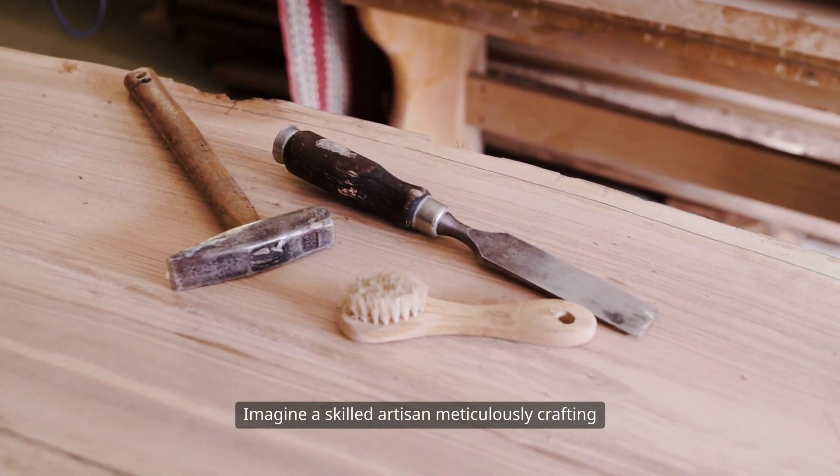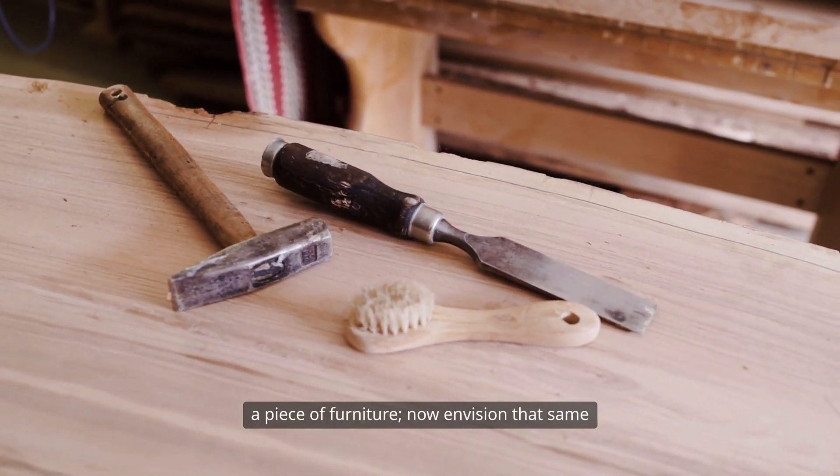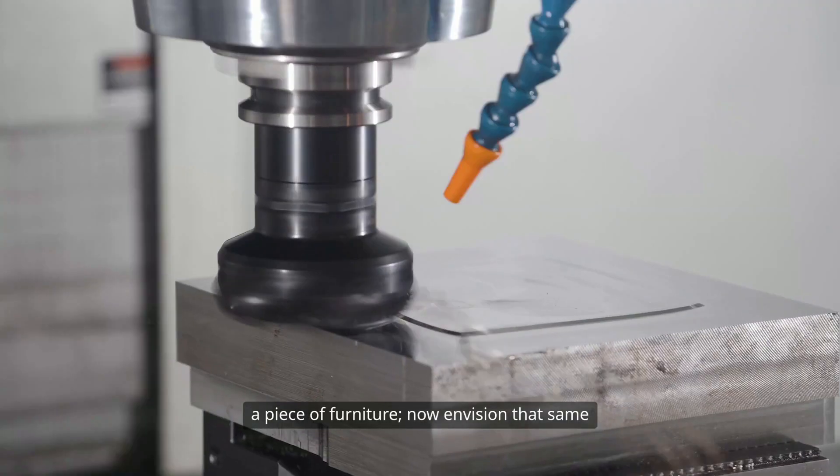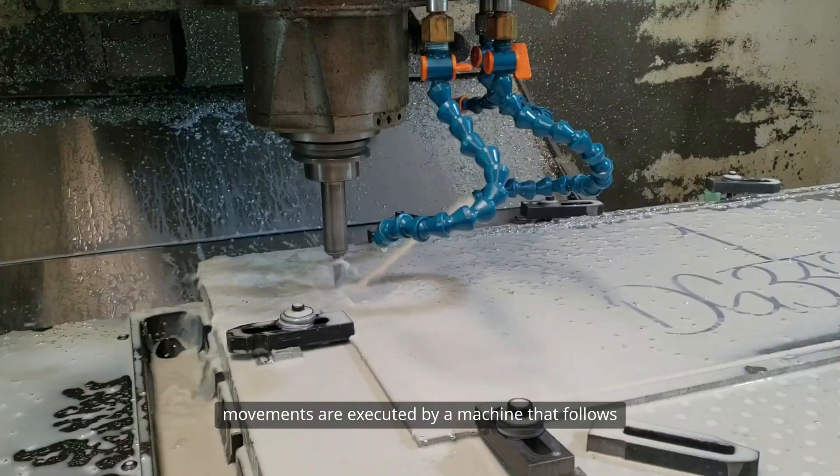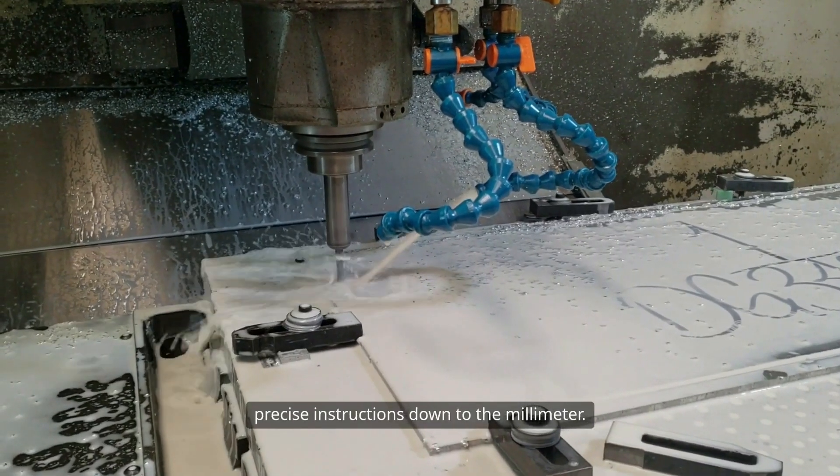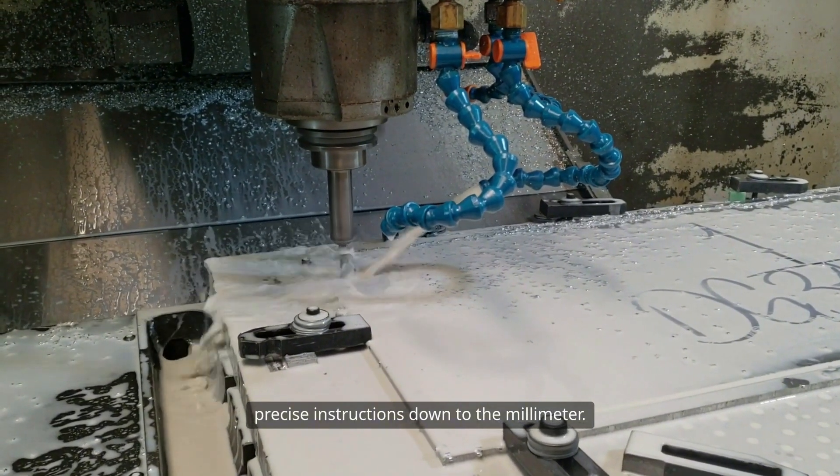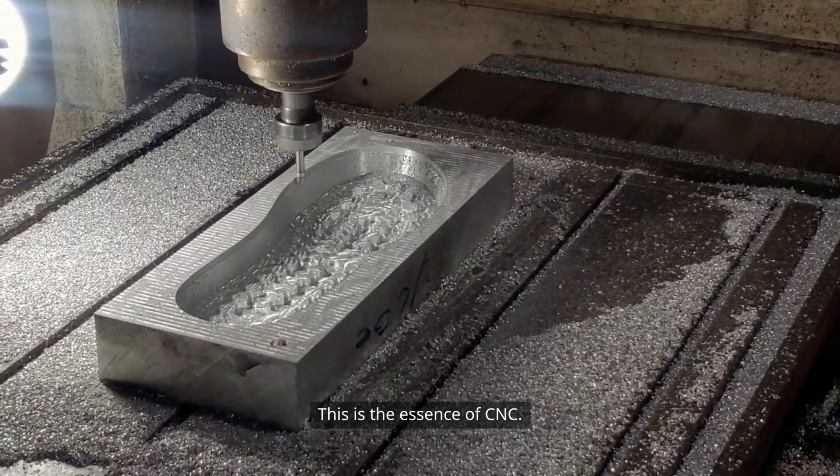Imagine a skilled artisan meticulously crafting a piece of furniture. Now envision that same artisan, but instead of tools held by hand, the movements are executed by a machine that follows precise instructions down to the millimeter. This is the essence of CNC.